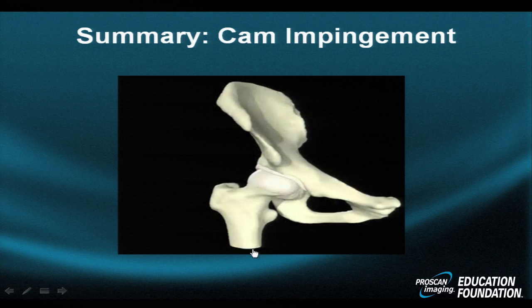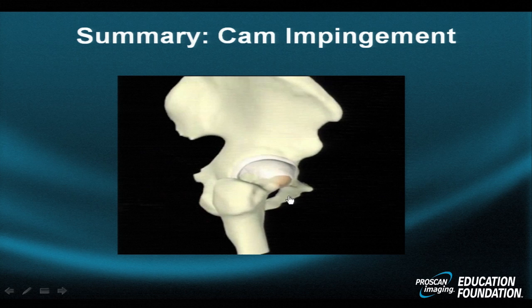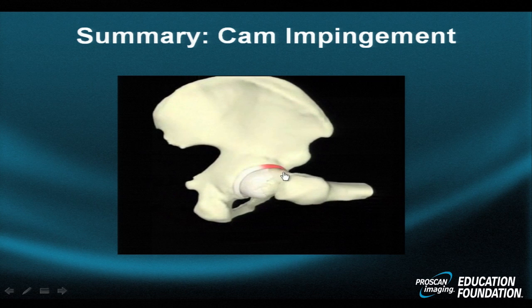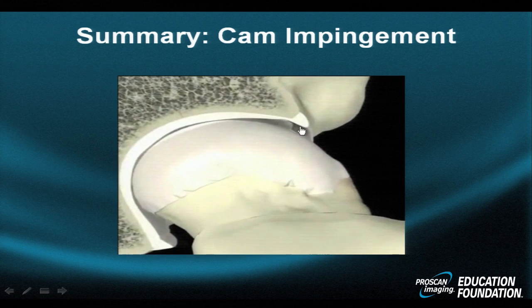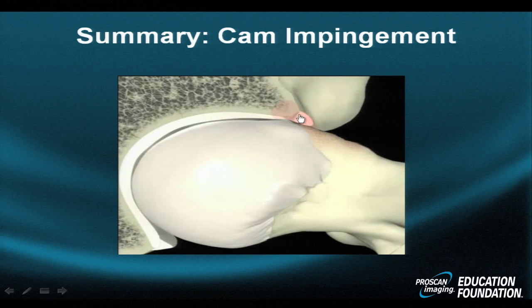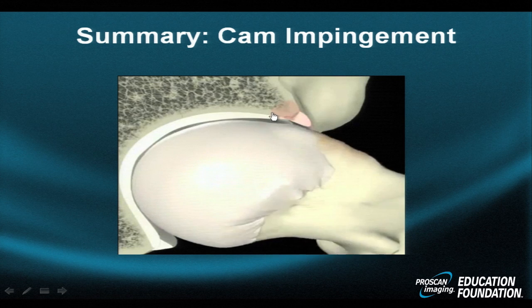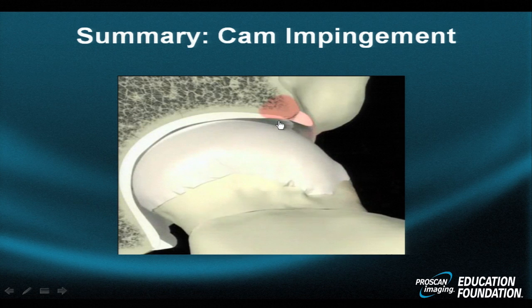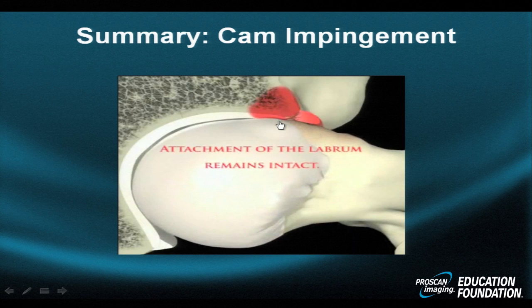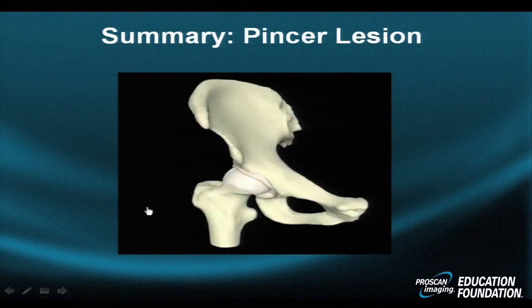Let's summarize classic cam impingement. Looking at it dynamically: there is a bump and a broad, non-tapered femoral neck. In flexion and internal rotation, the bump abuts the anterior acetabulum, creating a bruise, then a tear or erosion of the anterior acetabular limbus or labrum. The underlying bone and cartilage become affected and eroded. This erosion may then progressively extend from anterior to posterior over a quite variable distance, potentially involving almost the entire acetabular rim over time.